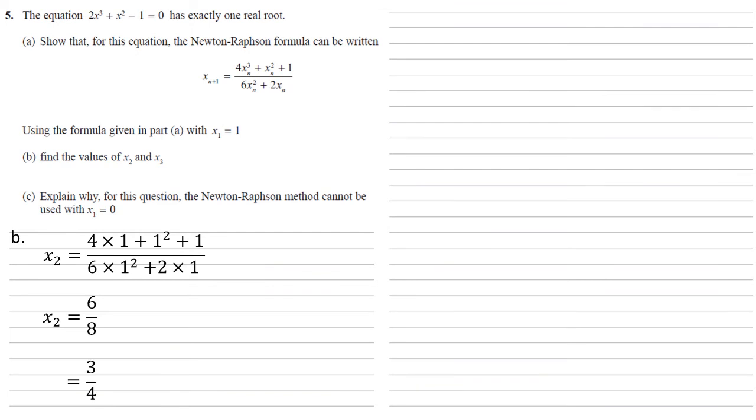To find x3 we're now going to put 3 quarters into our formula. So x3 equals 4 times 3 quarters cubed plus 3 quarters squared plus 1 all over 6 times 3 quarters squared plus 2 times 3 quarters, which gives us 13 over 4 all over 39 over 8 which simplifies to 2 thirds.